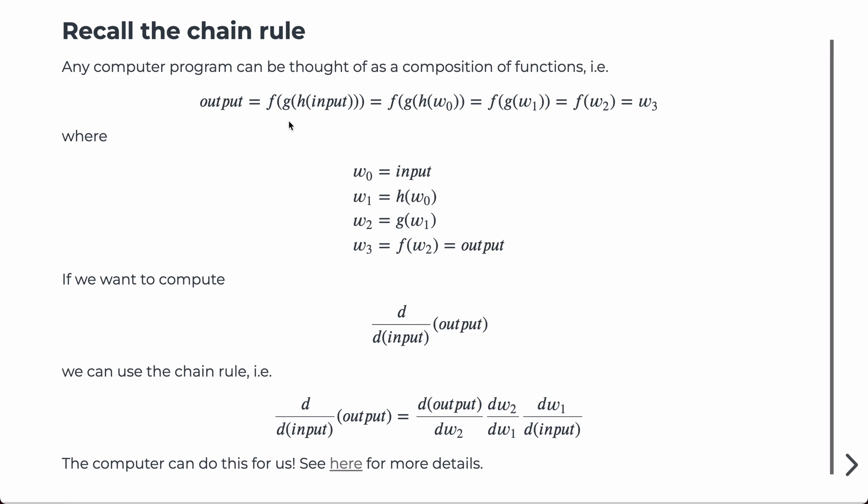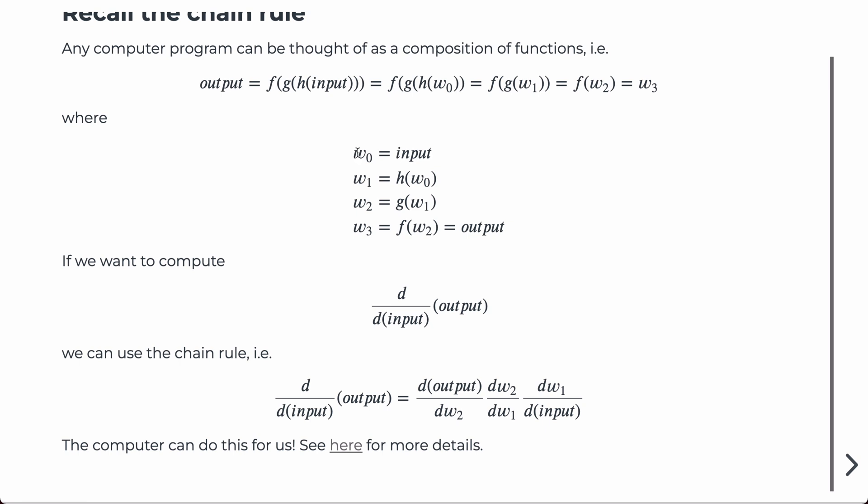So if we want to compute a derivative of the output with respect to the input, then we can decompose or use the chain rule to decompose this function. I just create some intermediate variables here: w0, w1, w2, w3, and then run the chain rule on this differentiation of the output with respect to the input. It looks something like this, and it turns out the computer can actually do this for us.